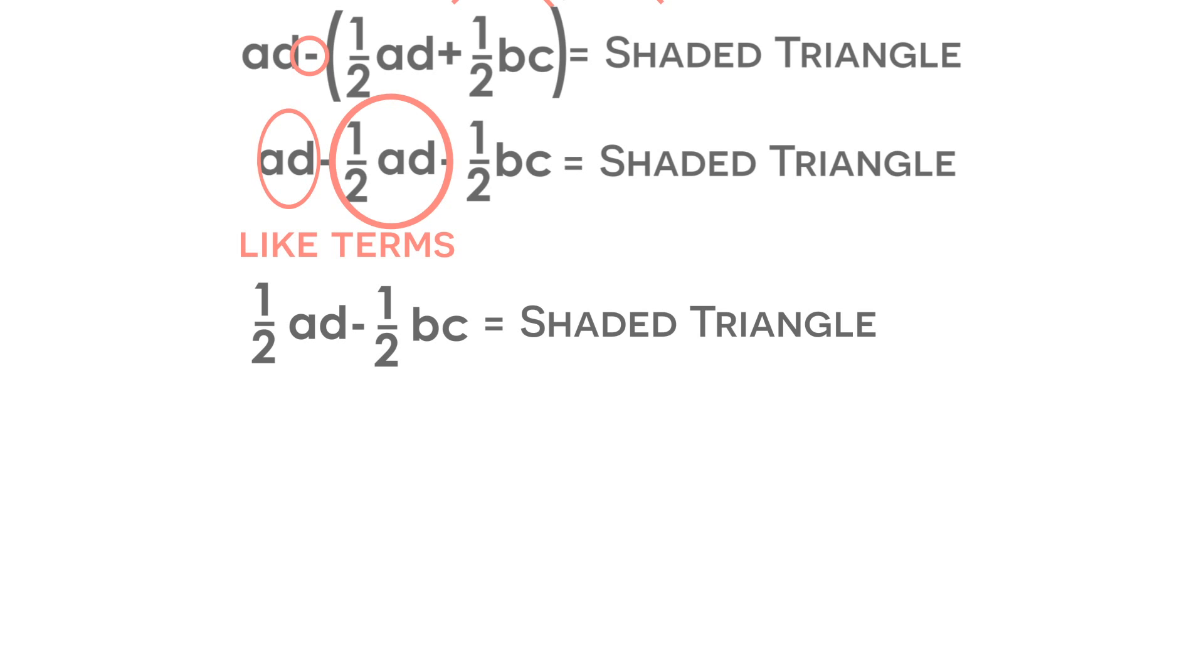And we're still not finished. We can factor out the one-half that both of these terms have in common. So if we factor out this one-half, we have one-half, and in parentheses, we have AD minus BC. And this is the solution to our problem.